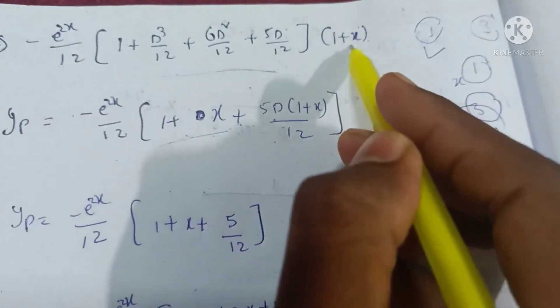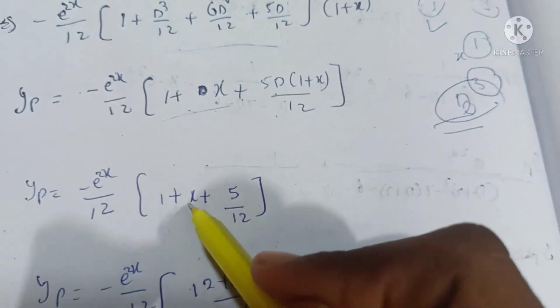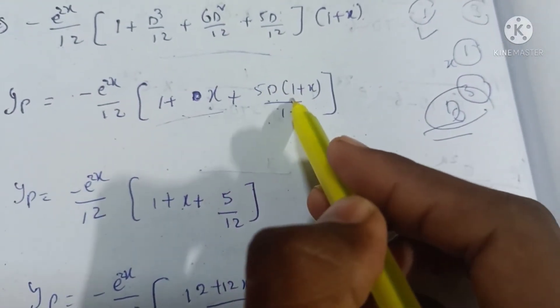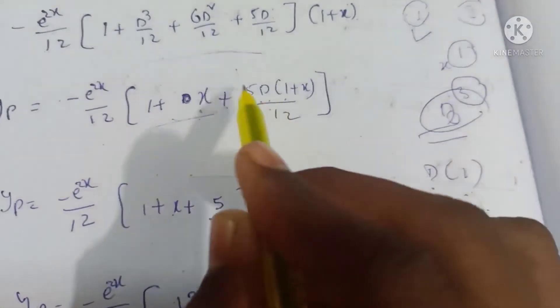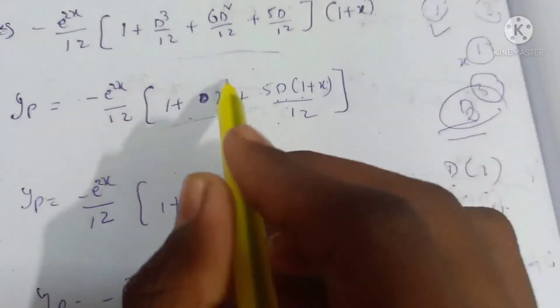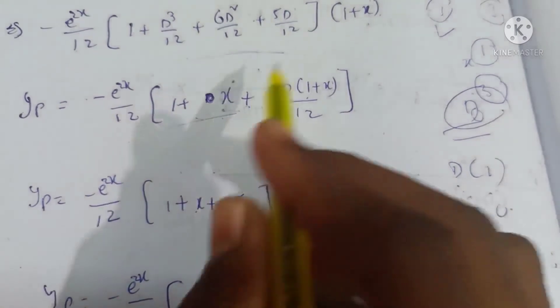For 5D/12, D is power 1. So we get 5/12 × D(1 + x). The derivative of 1 is 0. The derivative of x is 1.